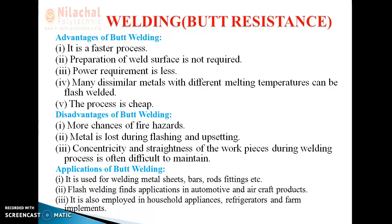Number three, welding strength is not good. After joining, if you test it using a UTM machine, in comparison to other welding processes it cannot provide the required level of strength. So if the cross-sectional area is more, it is recommended to avoid this type of welding. But if the workpiece has a small cross-sectional area, then it can produce good strength.